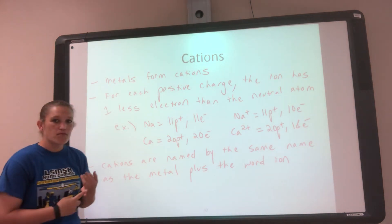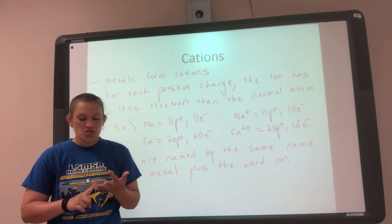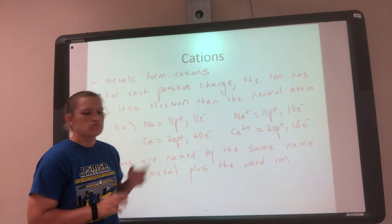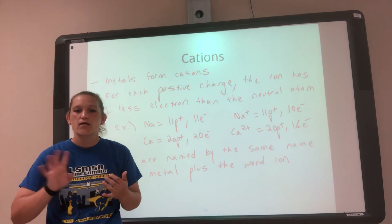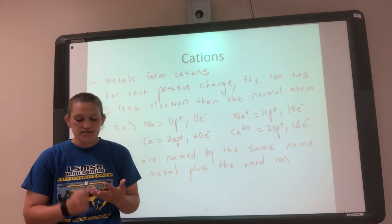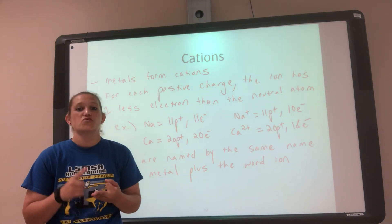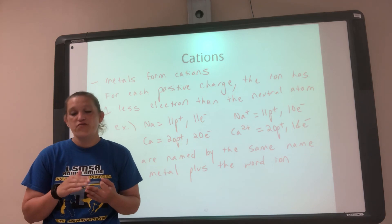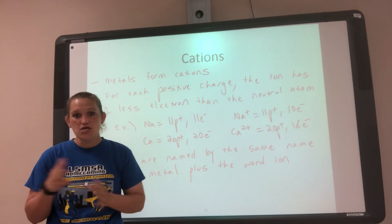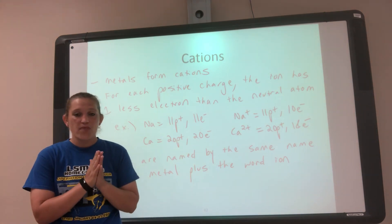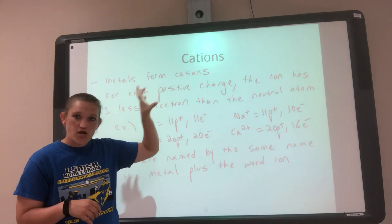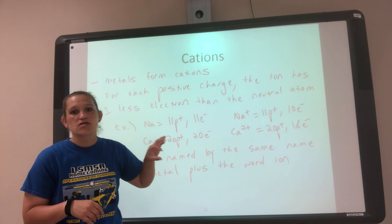To summarize: if you change the number of protons, you change the element; if you change the number of neutrons, it's an isotope; if you change the number of electrons, it's an ion. More specifically, if you add electrons it's an anion, and if you remove electrons it's a cation. Those are the three ways you can affect subatomic particles. Now we're going to change gears — we've covered the three subatomic particles, and next we'll get into more detail about the mass number on the periodic table.